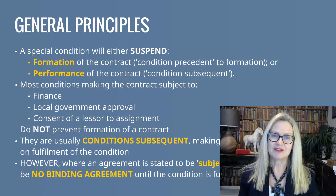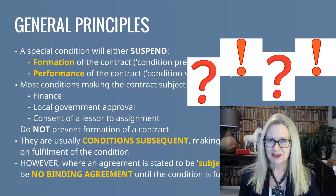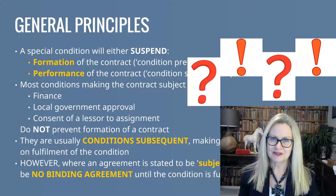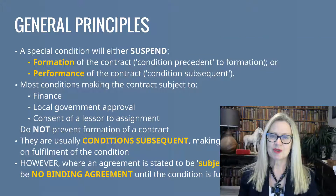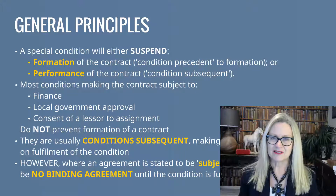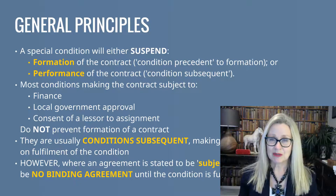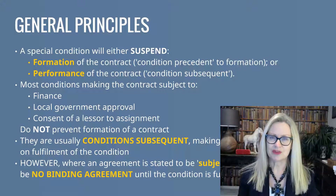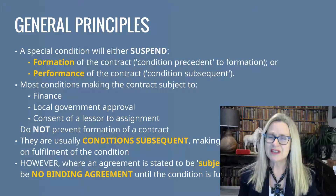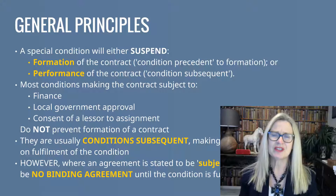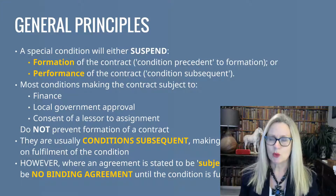So looking first at classification: thinking back to your contract law days, you might describe a term as a condition precedent or a condition subsequent, or preface your entire agreement by saying it is subject to formal contract. The terminology here can get a little bit confusing. A special condition can either suspend formation of the contract — that's normally where we talk about conditions precedent — or it could suspend performance of the contract, which we normally call conditions subsequent.